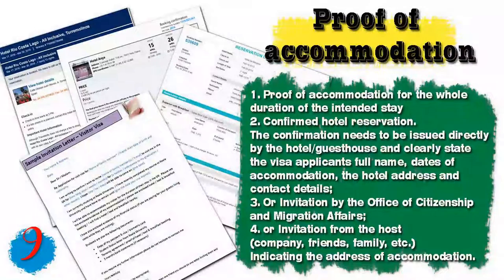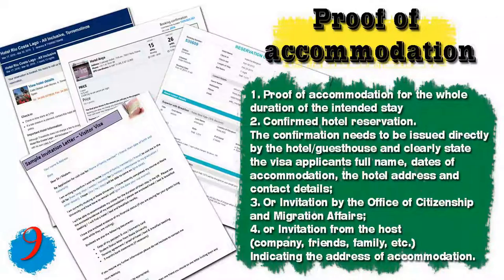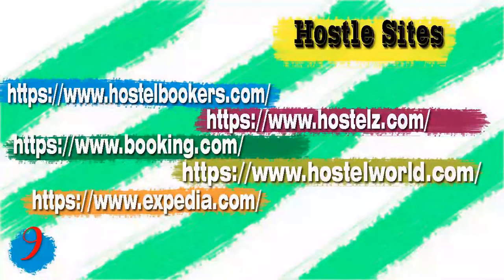Number nine, you will need proof of accommodation for the whole duration of your intended stay. It should be a confirmed hotel reservation clearly stating the applicant's full name, dates of accommodation, hotel address, and contact details. If you don't have a hotel reservation, you will need an invitation from the Office of Citizenship and Migration Affairs, or from a host such as a company, friends, or family, indicating the address of accommodation.